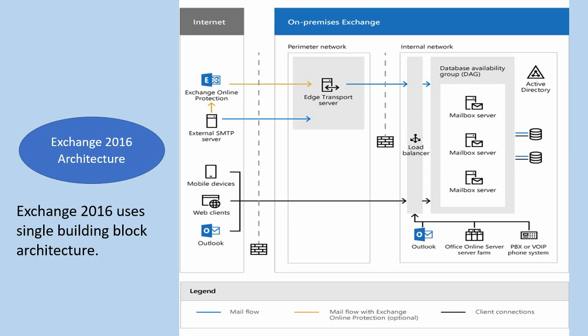Let's have a look at this diagram first. It has three mailbox servers and a DAG. The AD site contains a writable DC which is also a global catalog server. It has a hardware load balancer for internal and external client access traffic. An edge server is in a perimeter network connecting to the Exchange site LAN through an internal firewall.